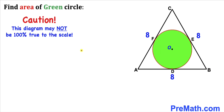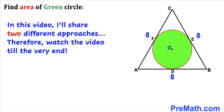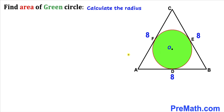Note that this figure may not be 100% true to scale. In this video I'll share two different approaches — with and without trigonometry — so please watch till the very end. Since we want to find the area of this green circle, we must calculate the radius first.